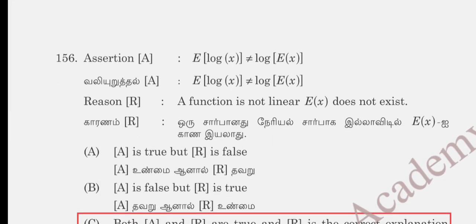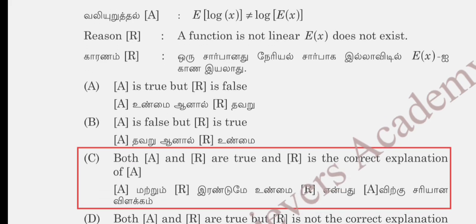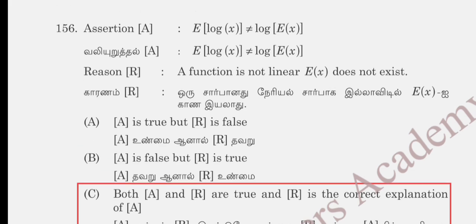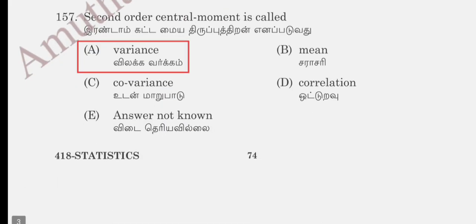Question 156: E[log X] is not equal to log E[X] because the function is non-linear and E of X does not exist. Option C is either: assertion true but not the correct explanation — the reason being the function is non-linear. Question 157: the second order central moment is called the variance, mean, covariance, or correlation. Variance is the correct answer.